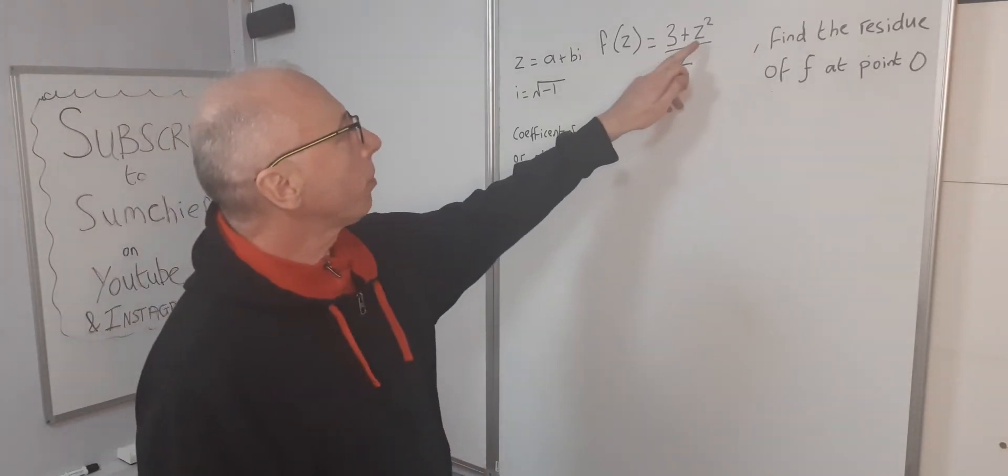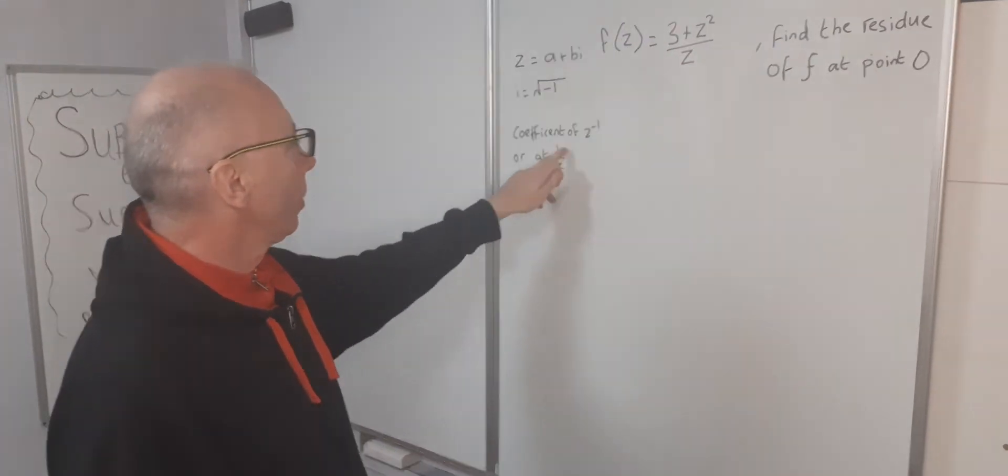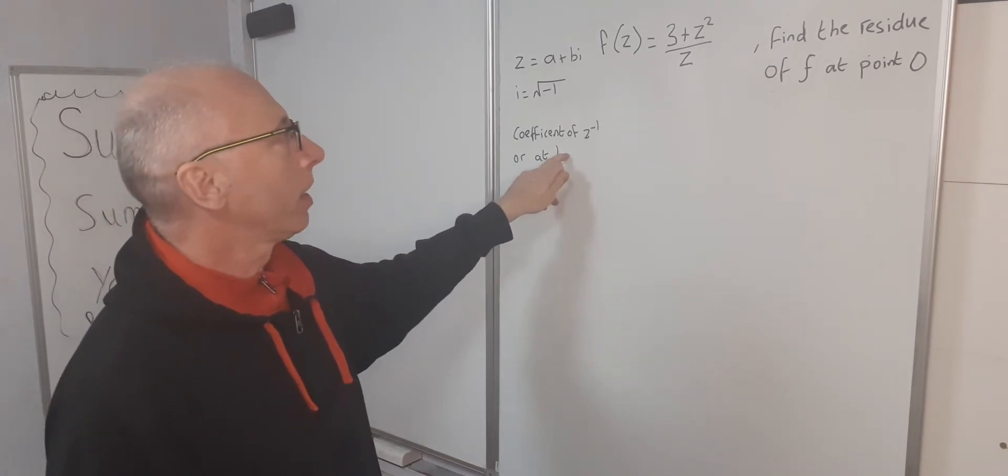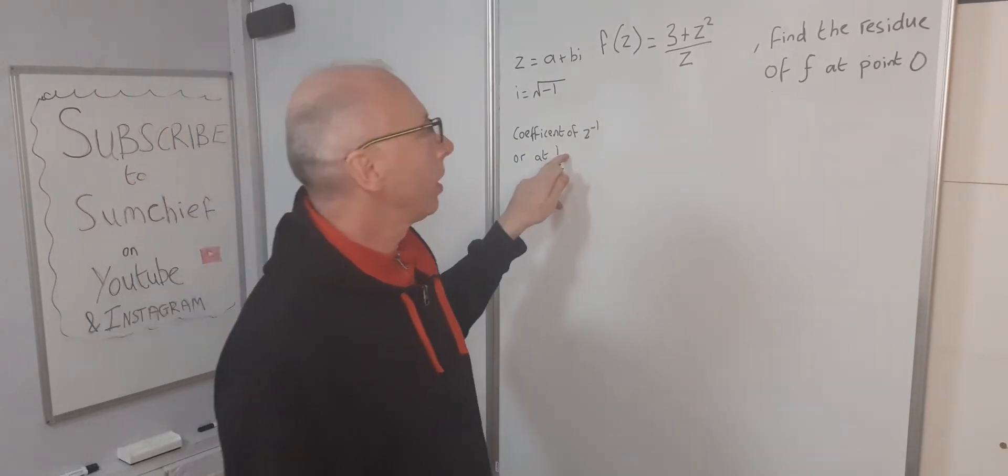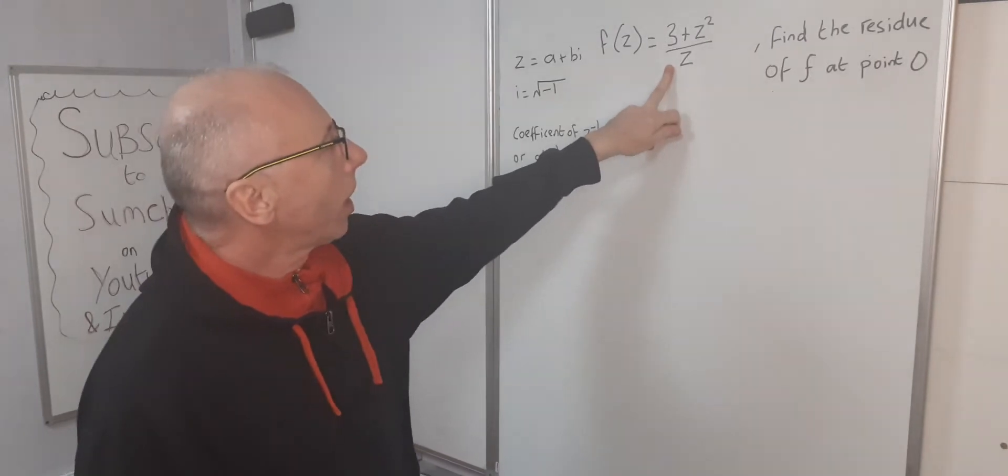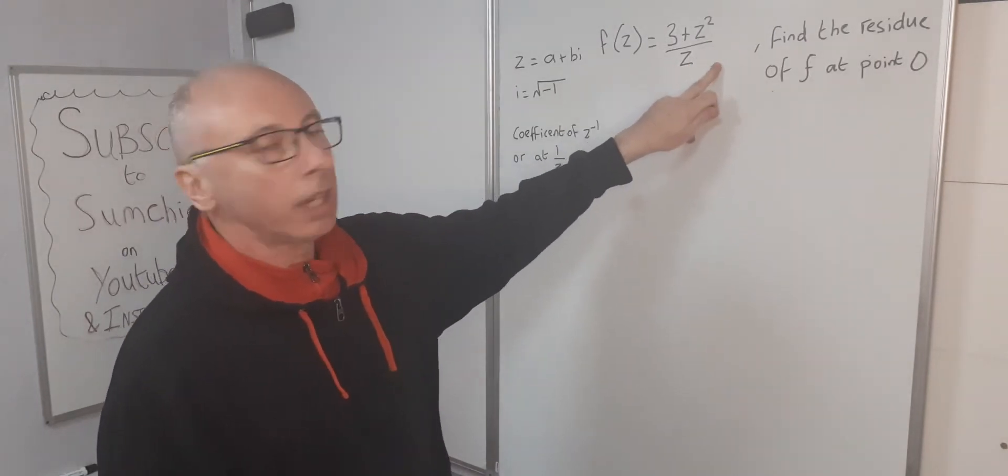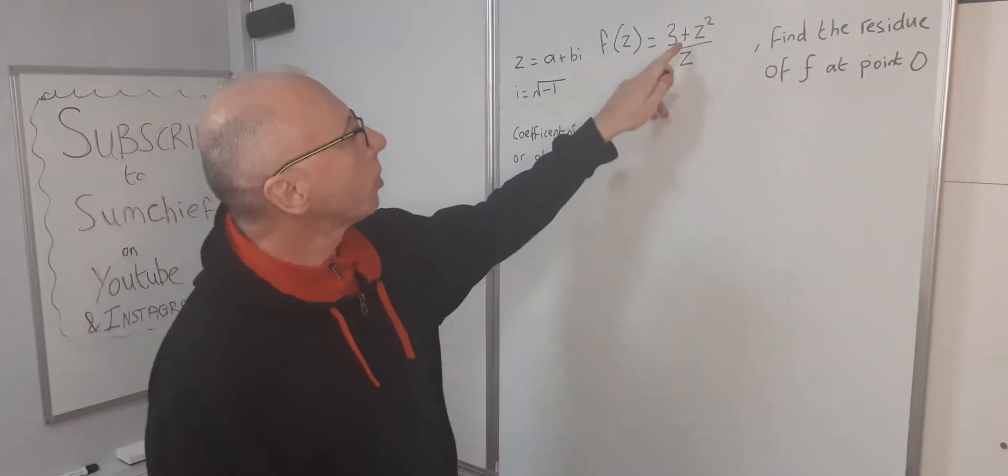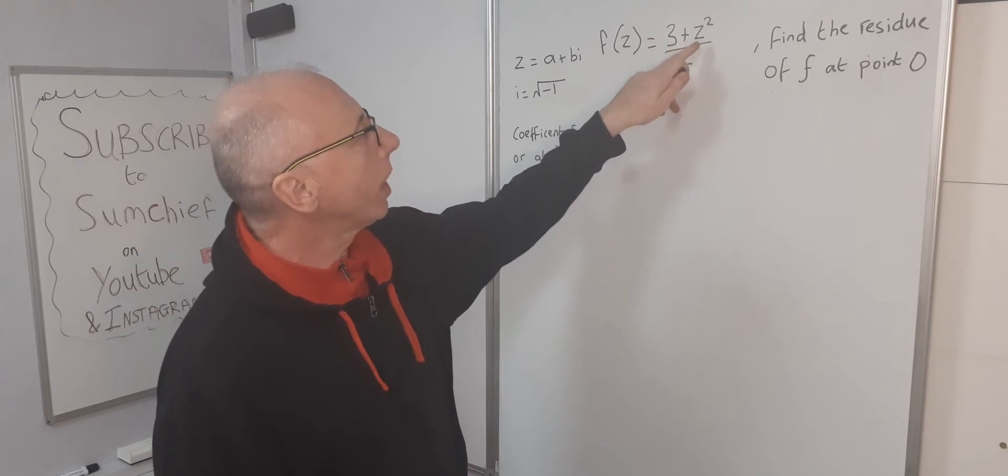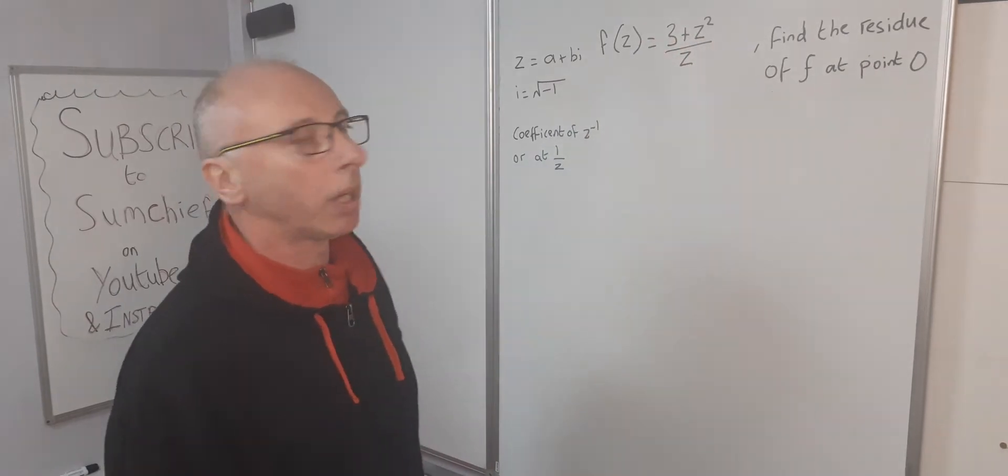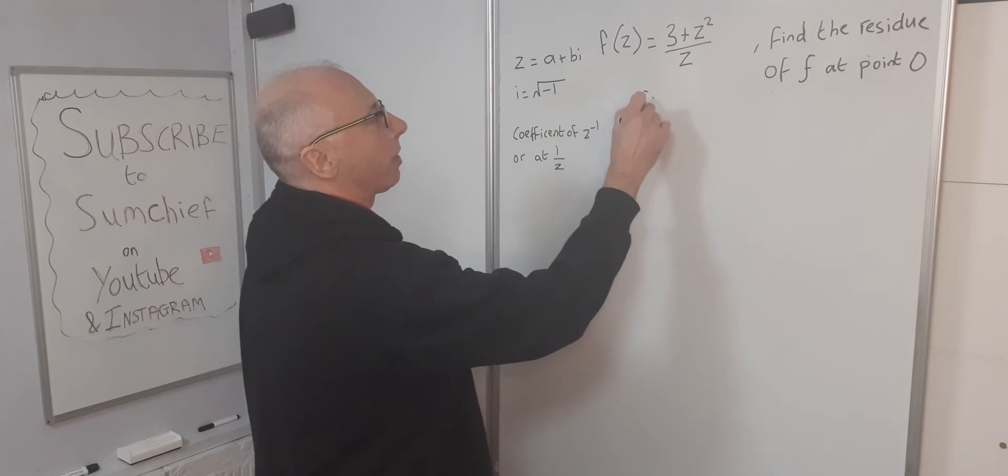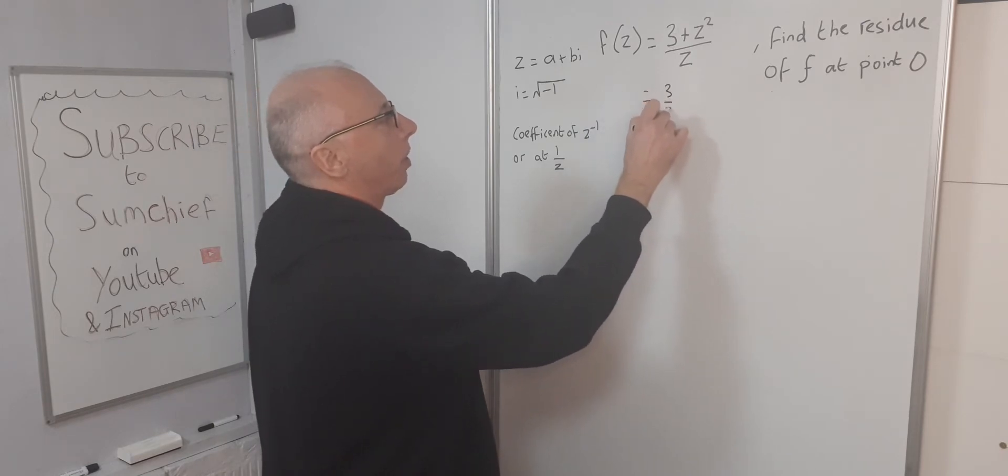This function (3 + z²)/z is not quite 1/z, so we're going to find the Laurent series. To do this, since we have 3 + z² on top, we can break this fraction apart: (3 + z²)/z is the same as 3/z + z²/z.